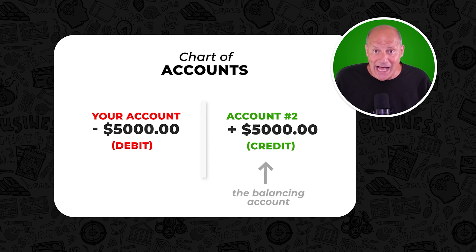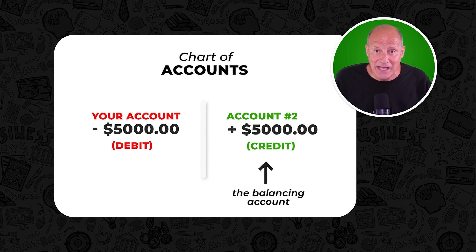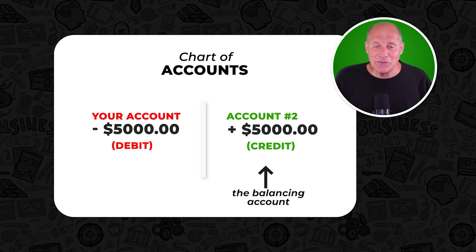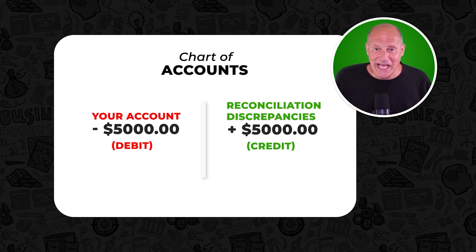The balancing account that records any adjustment to a bank account in order to fix your reconciliation has a special name: it's called Reconciliation Discrepancies. If you open your trial balance and double-click to open the Reconciliation Discrepancy account, you will see every adjustment you ever made to every bank reconciliation that you needed to adjust. It shows the amount and the date, and you can put anything important in the memo field. We're about to do an example and you'll see that account appear on your trial balance for the very first time.